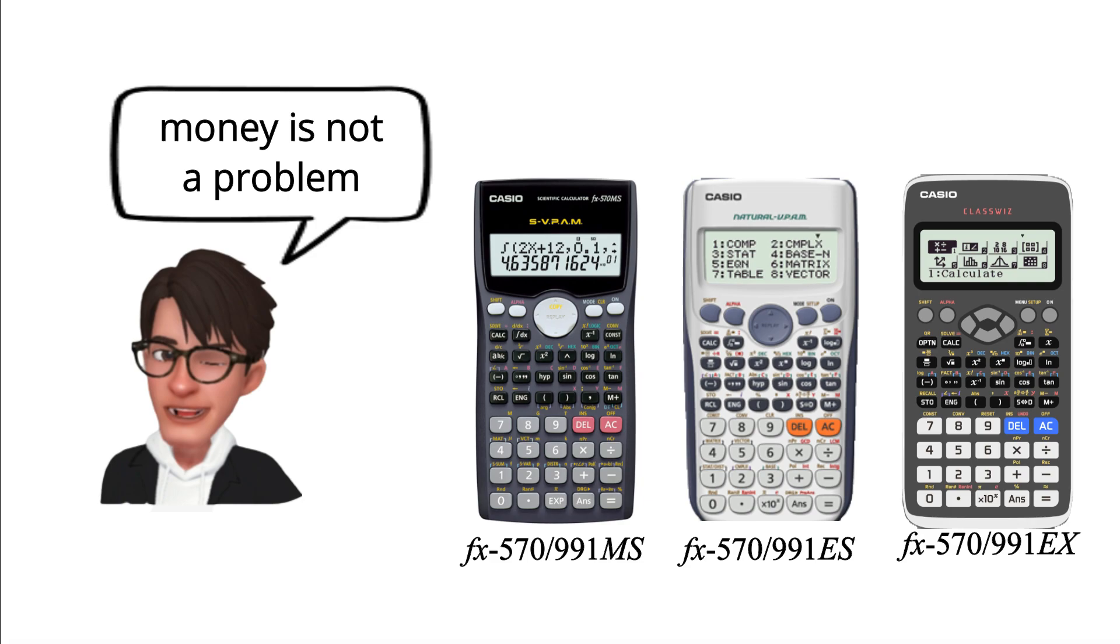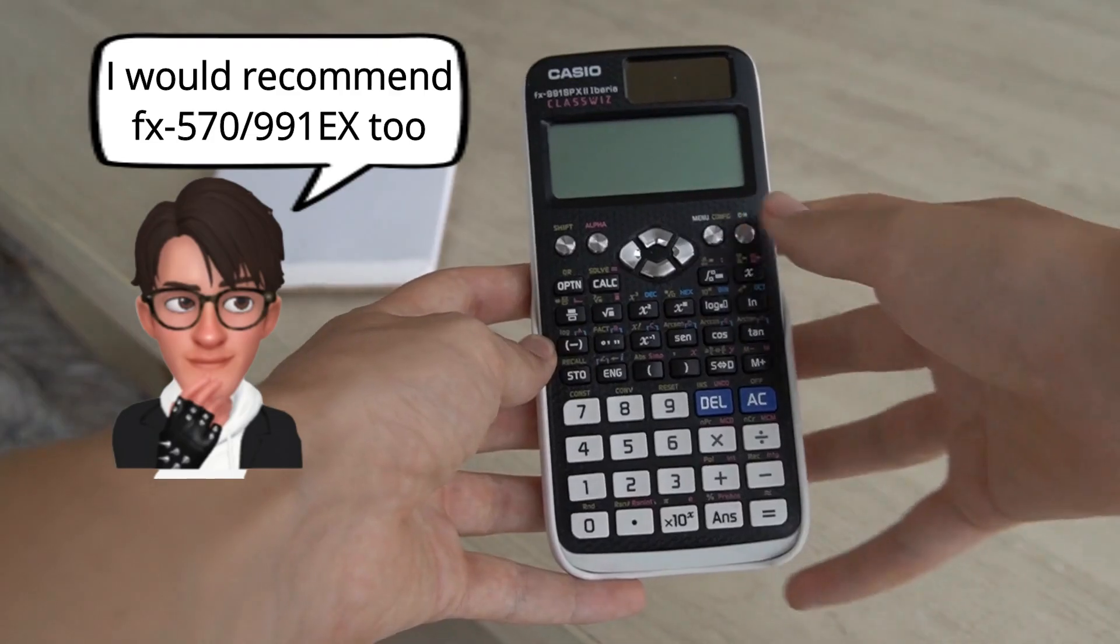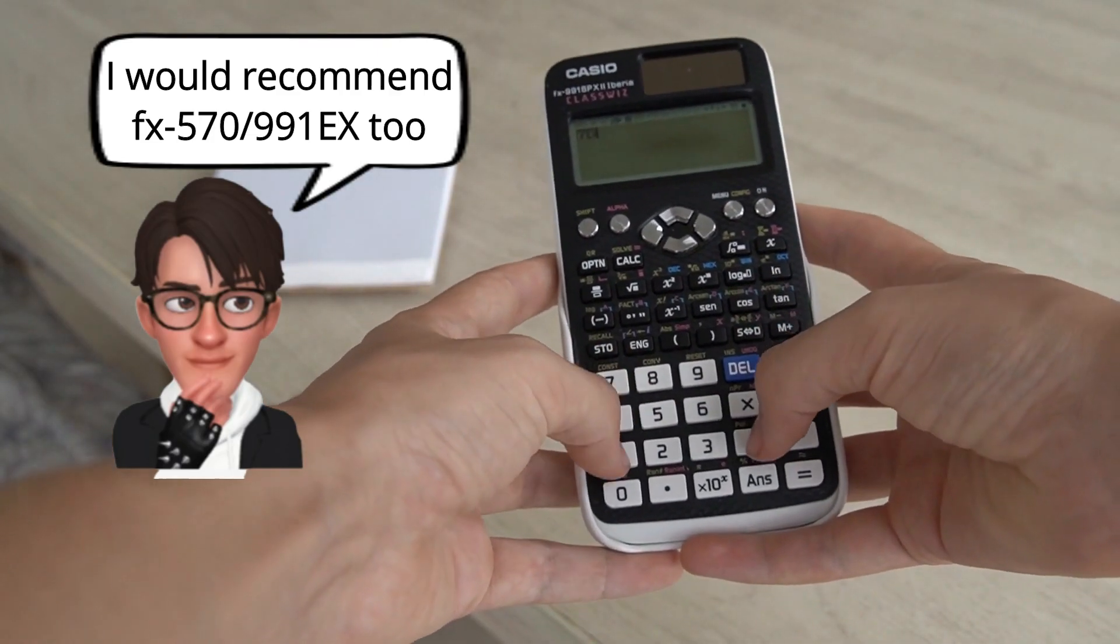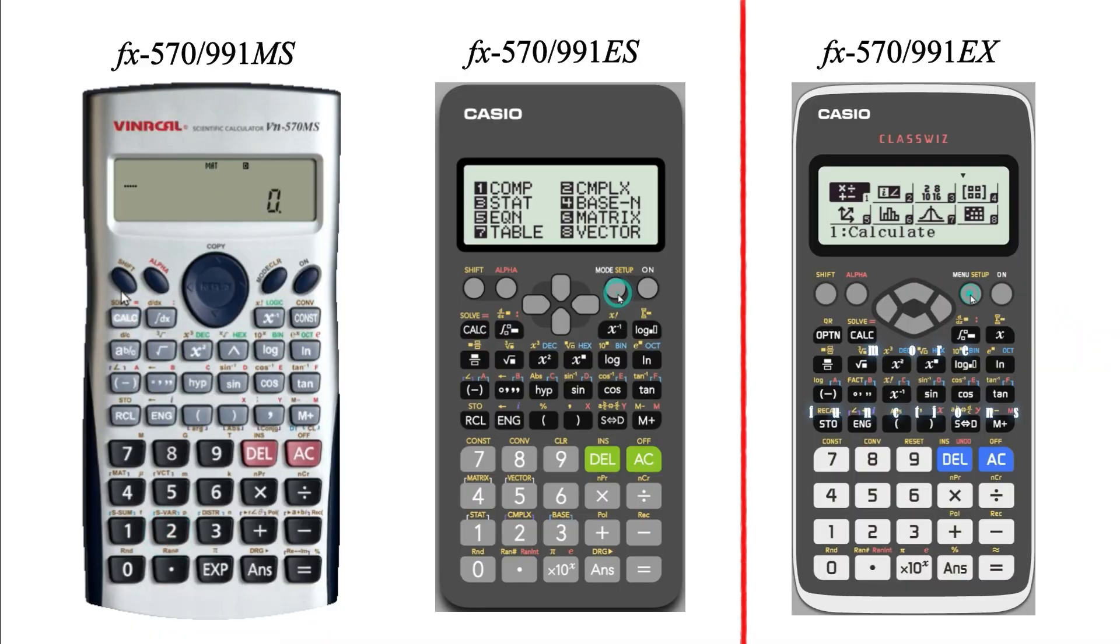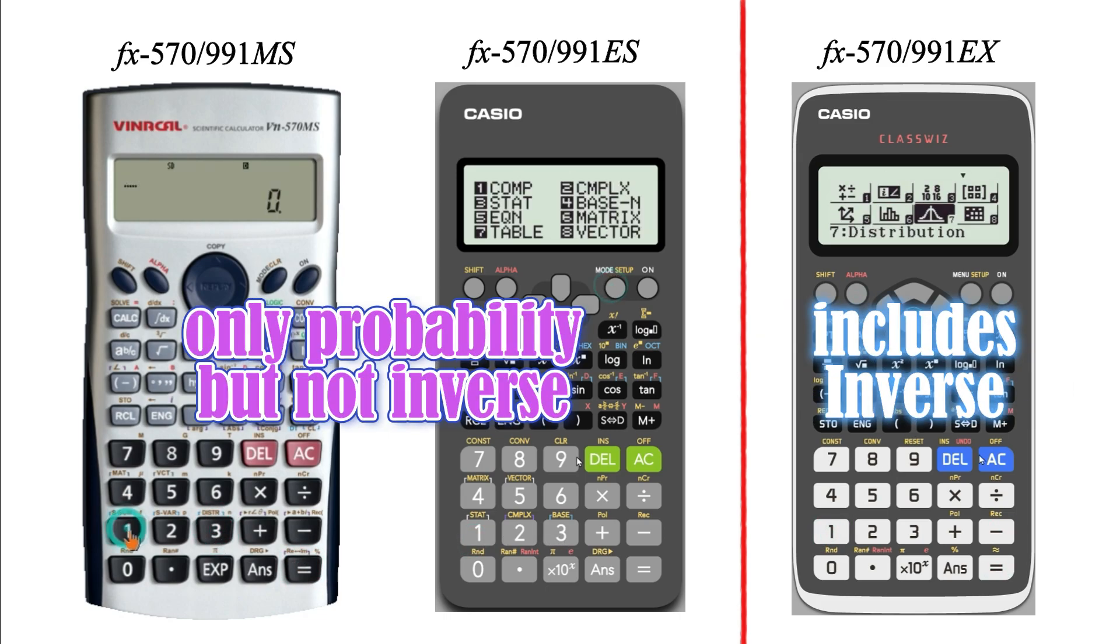But if budget isn't a concern, you can consider purchasing the FX570-991EX model. This is the model recommended by most math teachers because it has more functions that other models don't, such as fourth-order matrices, spreadsheets, inverse normal distribution, and more.